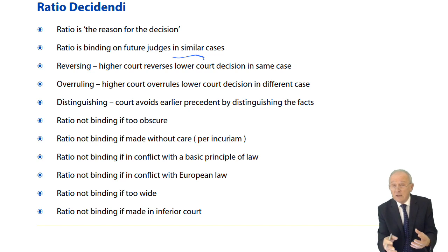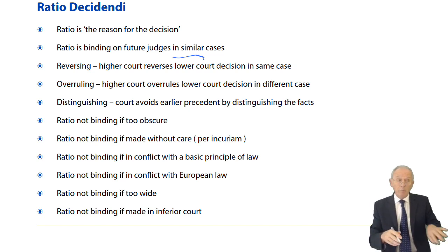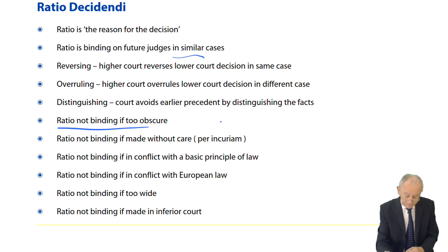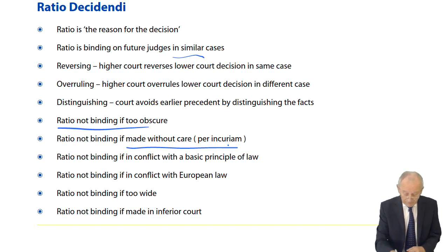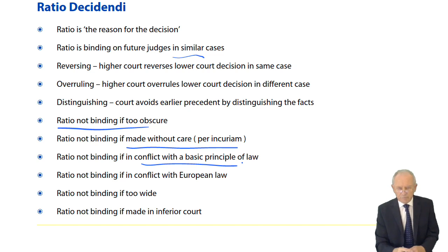Distinguishing is where a judge in the High Court distinguishes the facts of the case in front of them from earlier cases which established the ratio. Distinguishing says: 'I'm not bound by that ratio because the facts are not close enough to the case I'm now hearing.' You don't have to be exact — similar is close enough. A ratio is also not binding if it is made per incuriam — without care, without taking into account all the facts available — or if it's in conflict with the basic principles of law. If the decision is contrary to basic principles of law, then the ratio is not binding and would likely be overruled.